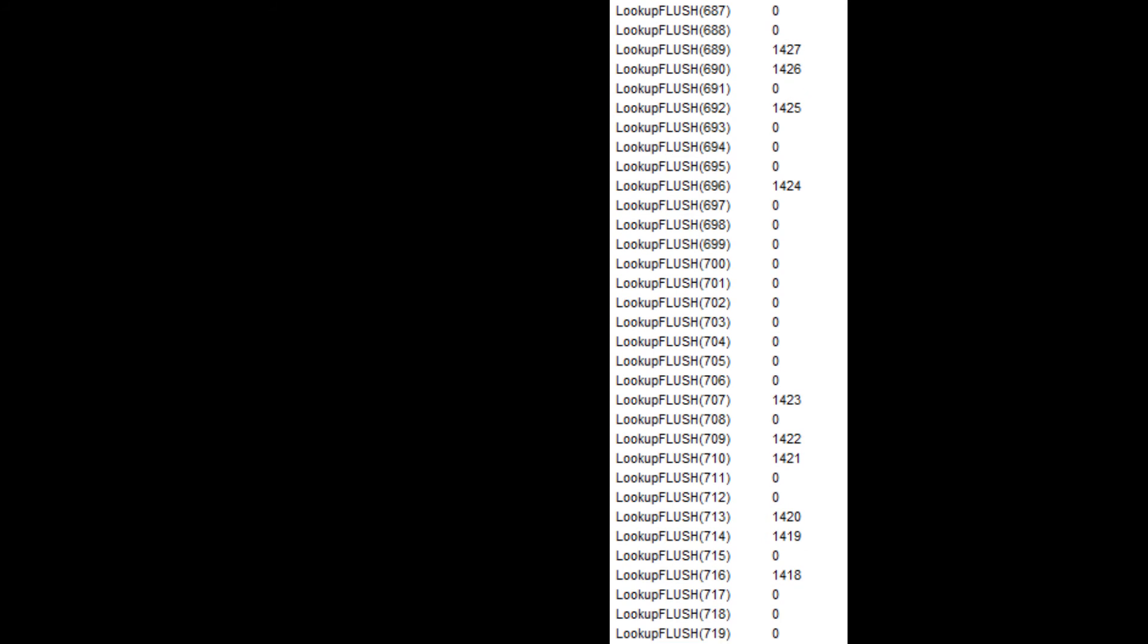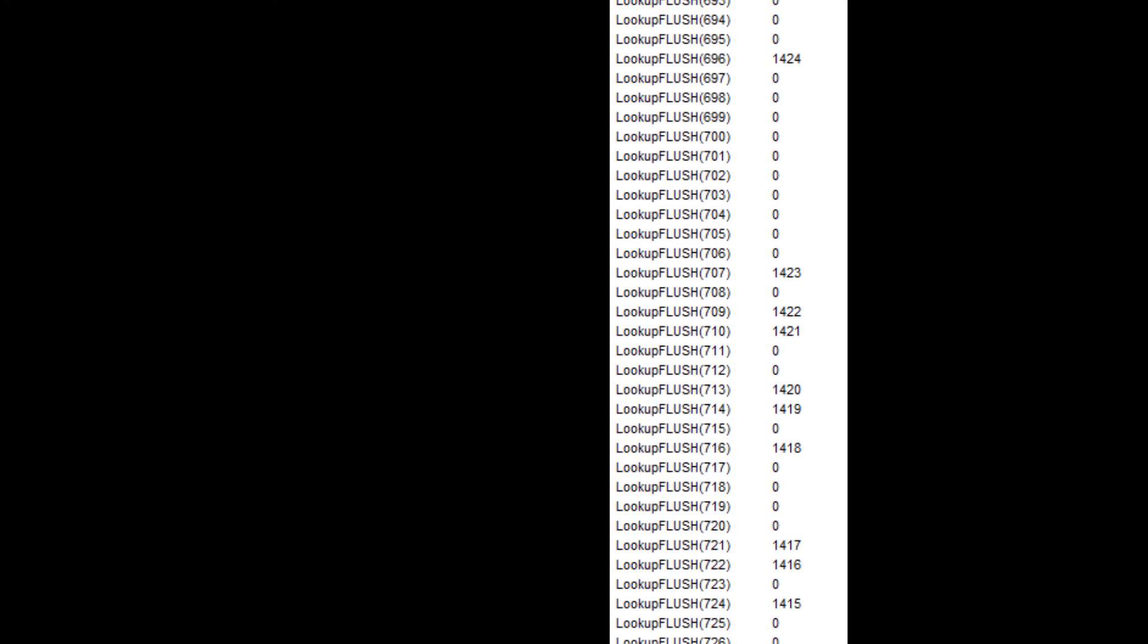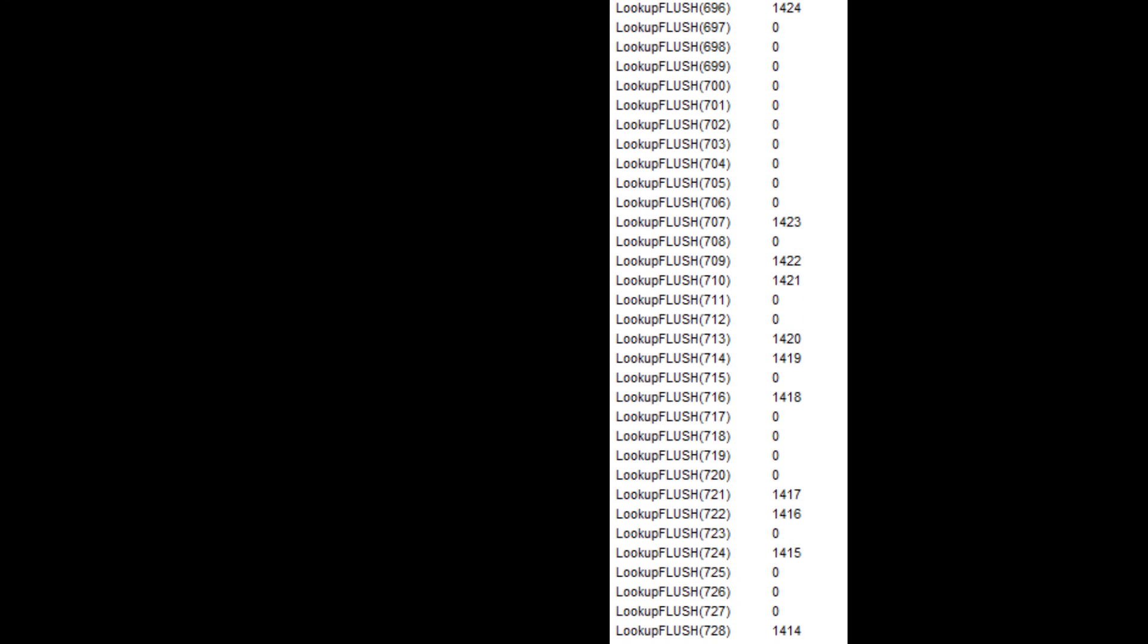At the end of all this I have a fully populated flushes array. Most of the entries are zero but I can now use this to check the hand rank of any flush combination in the deck. And how do I do this?